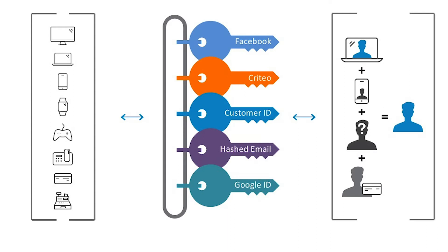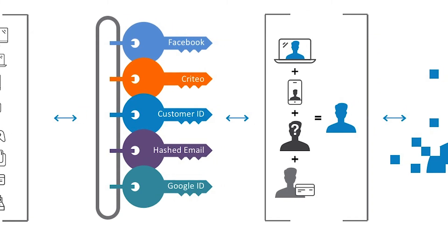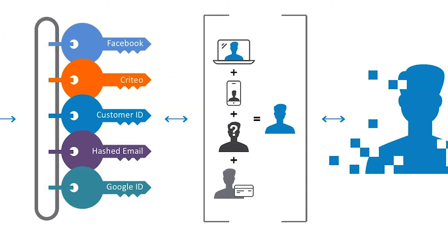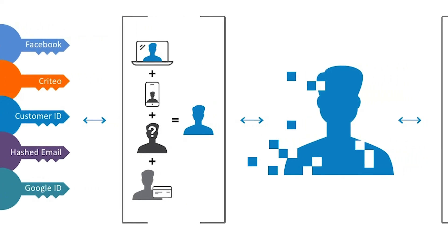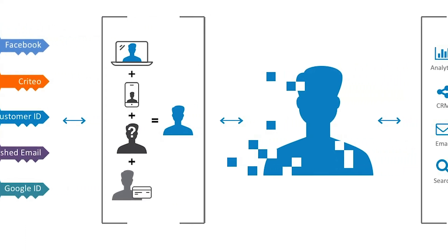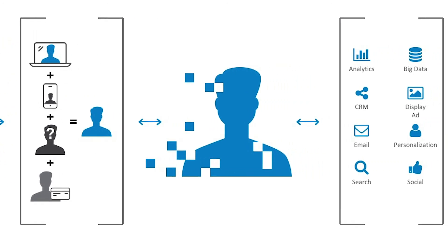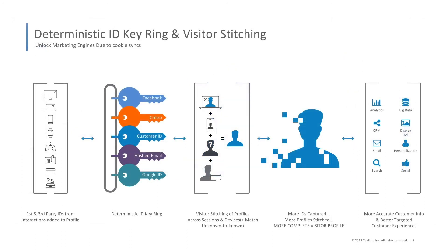Visitor stitching works by identifying a common ID between two profiles and combining them to create one single enriched profile for each person. Each new ID increases the number of identifiers available for an individual, making it easier to stitch together multiple profiles — ultimately giving you complete insight into each customer's journey and the behaviors they have displayed. Using this insight, you can create more targeted and personalized engagements for each of your customers.